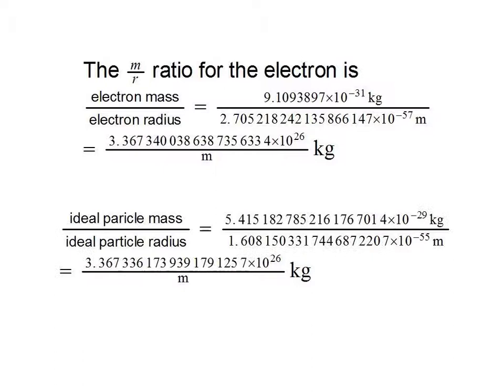And if we look at the ratio of the ideal particle mass to the ideal particle radius, we get the same value, 3.367 times 10 to the 26 kilograms per meter.